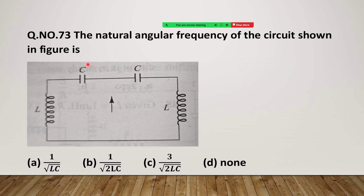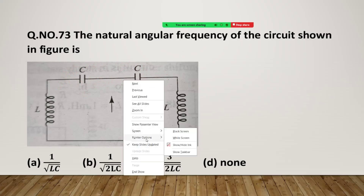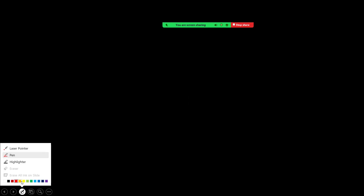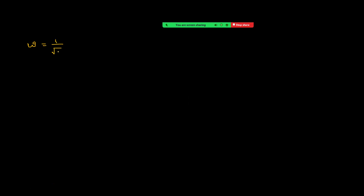Now, what is the effective capacitance between these two points? The effective capacitance is C by 2 — that is a series combination. So I am taking effective capacitance as C by 2. We are taking the effective capacitance and effective inductance. We have learned omega equals 1 by root LC, but here we have two inductors and two capacitors. Effective inductance is 2L and effective capacitance is C by 2. That means for the given circuit, the angular frequency is again equal to 1 by root LC.